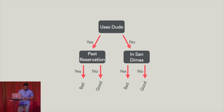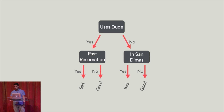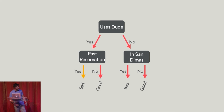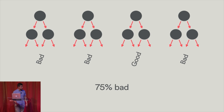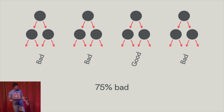I mentioned that we use random forests, so I'll talk a little about what that actually is. A random forest is made up of a number of different decision trees. A decision tree might look something like this, where each node represents a feature and each edge represents a value that feature might take. You follow the arrows down, making choices as you go: do they use the word 'dude' in their profile? Yes. Is the reservation in the past? Yes. So we can conclude this is indeed the actors we're looking for. The random forest is made up of a number of these decision trees, and the score you produce is the percent of trees that vote it as bad. In this case, 75% of the trees vote bad, so your score for how fraudulent something is would be 75%.